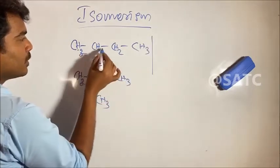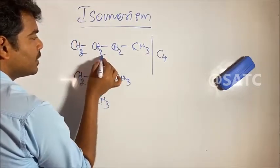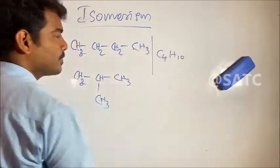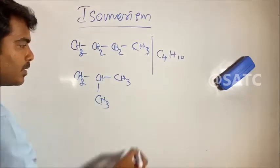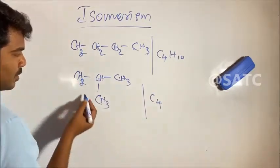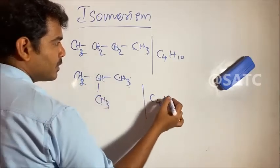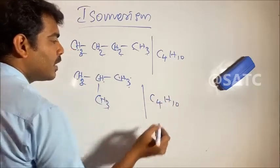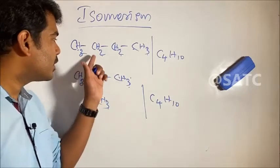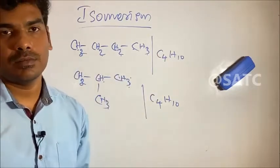Counting the atoms: 1, 2, 3, 4 carbons and 10 hydrogens — giving us the molecular formula C4H10. Both structures share the same molecular formula. These are isomers.